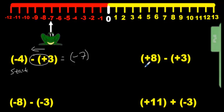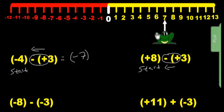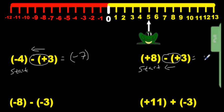We go on to the second one here, and we have a starting point at positive 8. So Mr. Frog goes to positive 8. We look at those symbols — we look at these signs — and we say they're different. So we have to go to the left three times. We're going to bounce three times. We end up at positive 5, so we have positive 5.